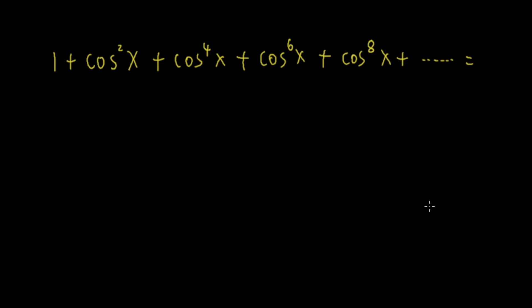Let's find out what this infinite series is equal to: 1 plus cosine squared x plus cosine to the 4th x plus cosine to the 6th x plus cosine to the 8th x, plus all the way endlessly. Notice that after the 1, they are all cosine x terms to a power.